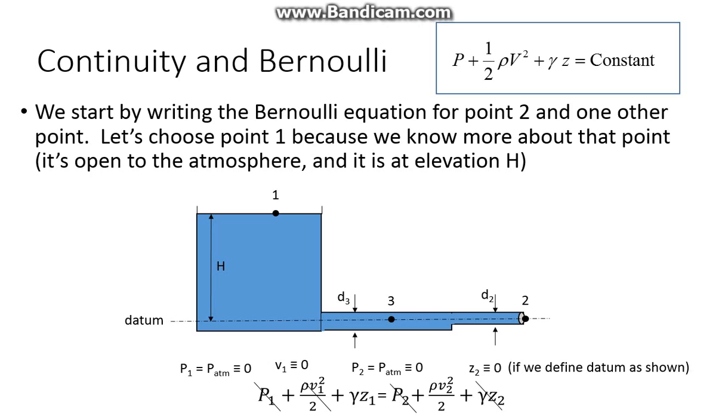So here's Bernoulli's. We know that the pressure, velocity, and elevation terms are equal to a constant in our viscosity-less world. Remember later we'll add some viscous forces and friction, but for now we don't have it. And then we can look at these three points. Let's call the top of the reservoir one, the outlet two, and the intermediate point three.